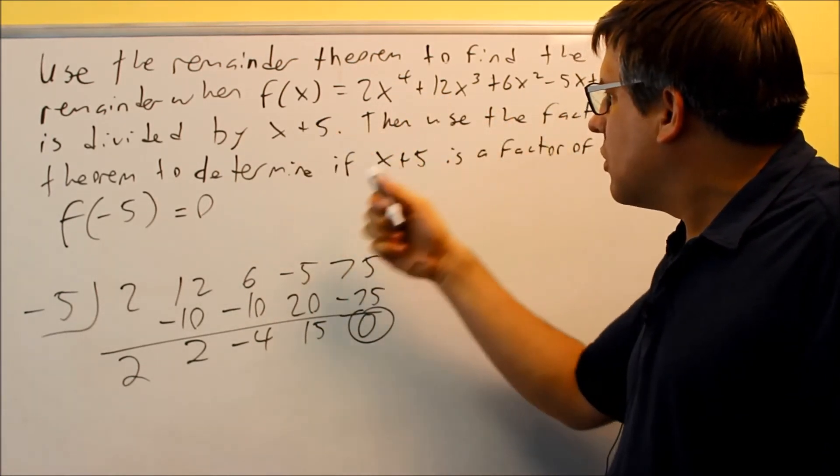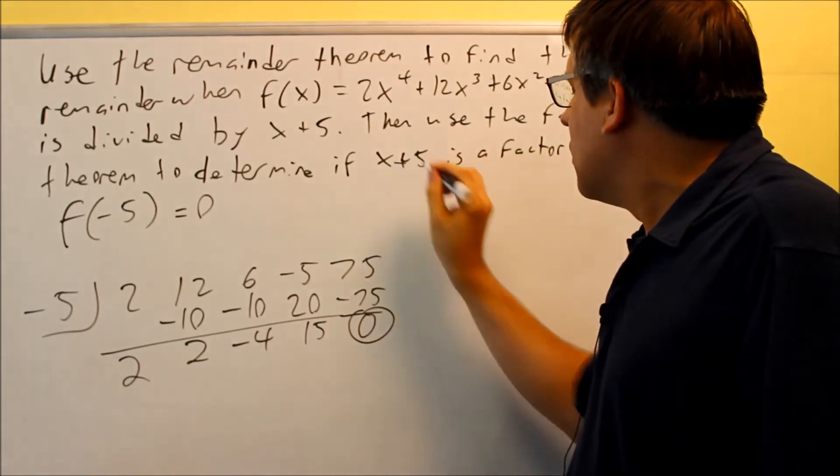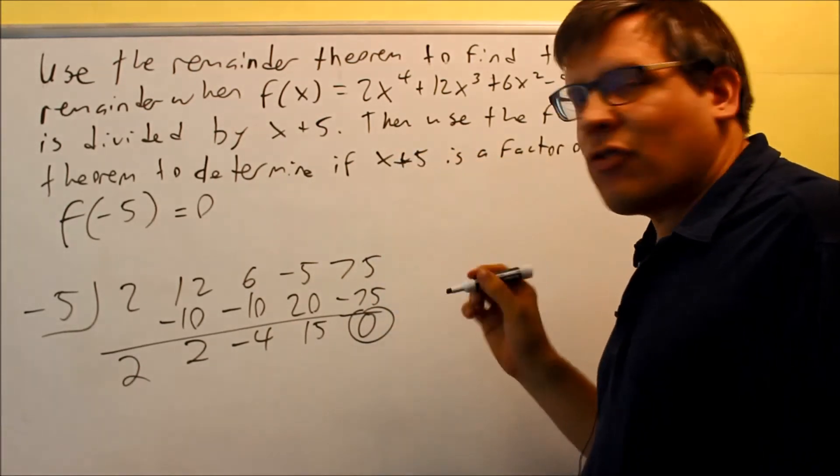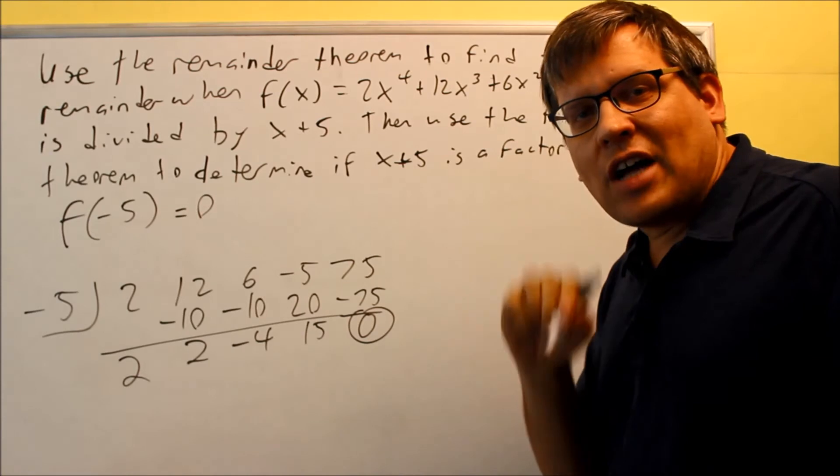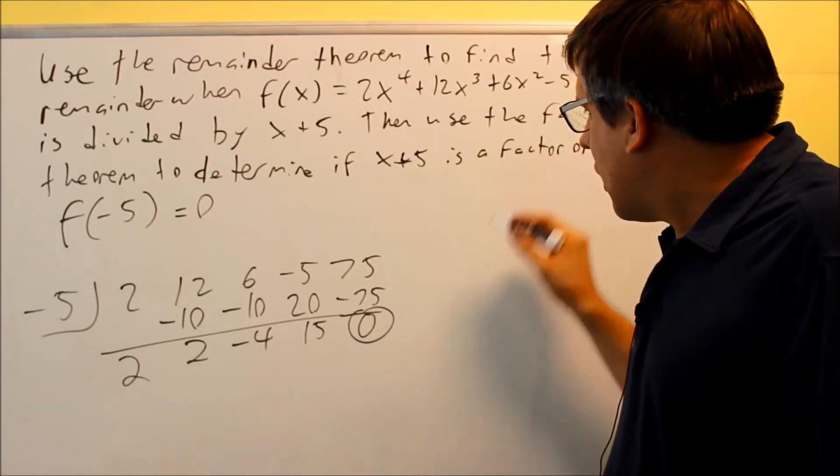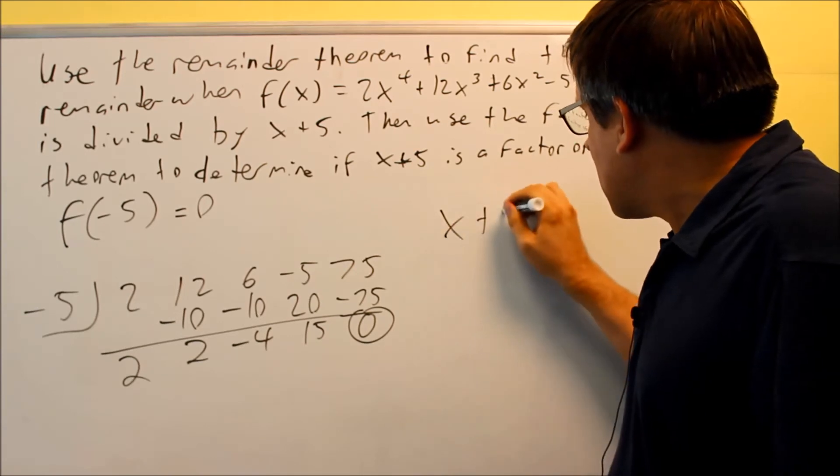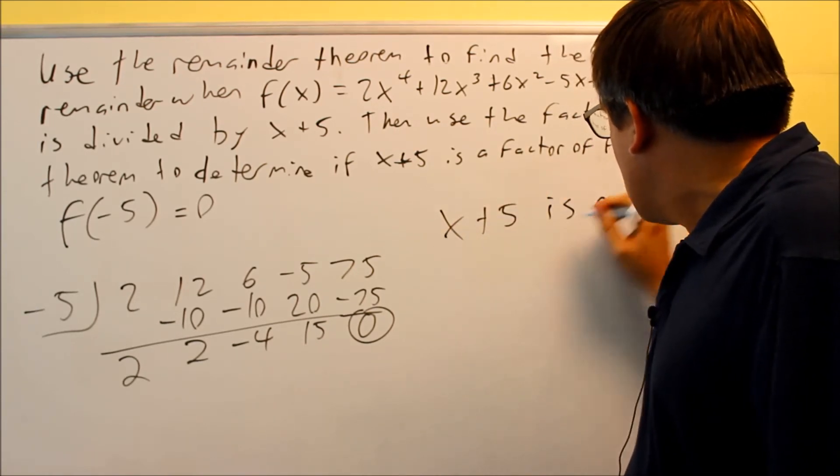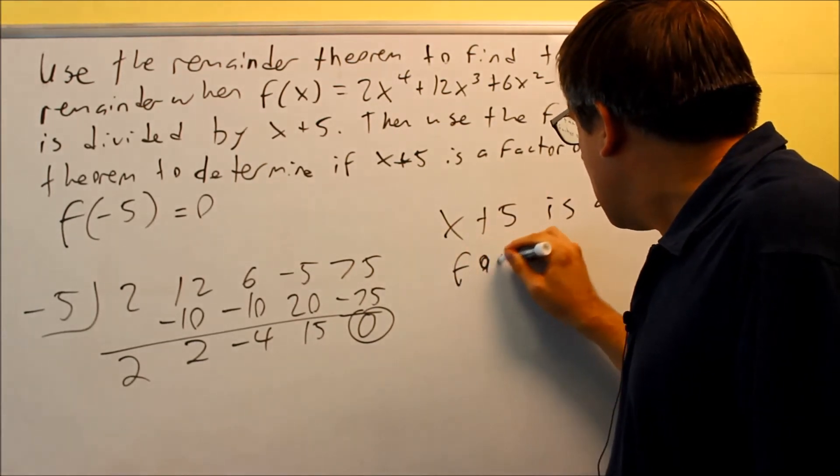Then it says, then use the factor theorem to determine if x plus 5 is a factor. Okay, if x plus 5 is a factor, that means it divides in evenly and we should get a remainder of 0. So because of the factor theorem, we can say that yes, x plus 5 is a factor of f(x).